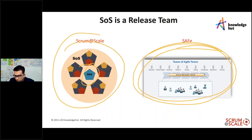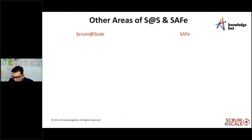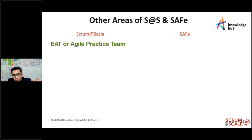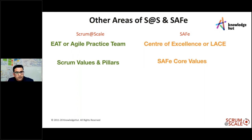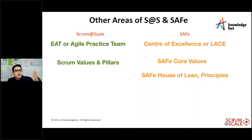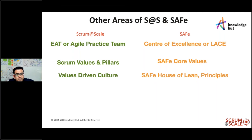Comparing other areas: Scrum at Scale has an Agile Practice Team, focused on building an agile ecosystem within the organization and ensuring quality of Scrum across the organization — similar to what SAFe calls LACE or a Center of Excellence. SAFe has core values similar to Scrum values and pillars, and the House of Lean and principles cover economic views, working collaboratively, and related factors.